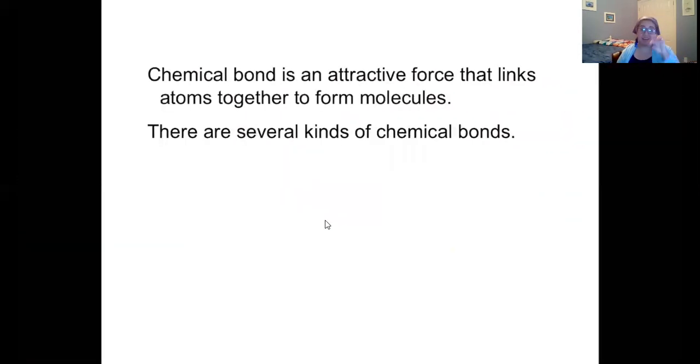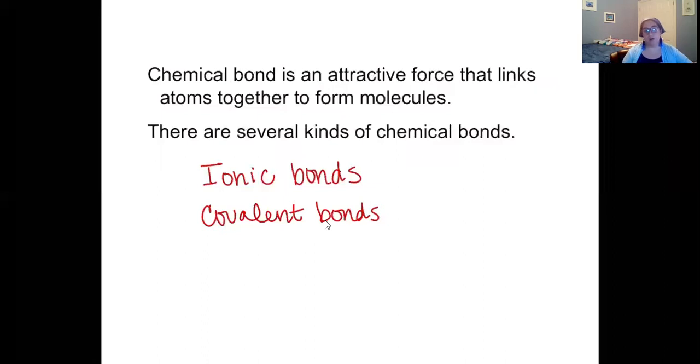A chemical bond is an attractive force that links atoms together to form those molecules. There are several different types of chemical bonds. Typically you learn about ionic bonds and then covalent bonds. These are two different types. But we are going to go in and focus on specific types of ionic bonds or covalent bonds, depending on the type of molecule that's being built.